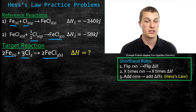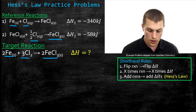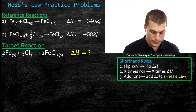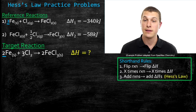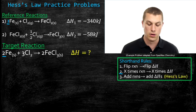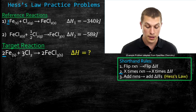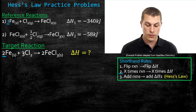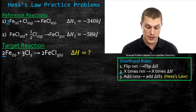The first thing you want to check is: do I need to flip my reactions? Here I have iron three chloride as a product, and reference reaction two has iron three chloride as a product — so my products are on the correct side, and I don't need to flip any reactions. The second thing to check is: are the numbers of my reactants and products correct? Here I have two irons in the target reaction, but only one in the reference reaction, so I need to multiply reaction one by two to get the correct number of irons.